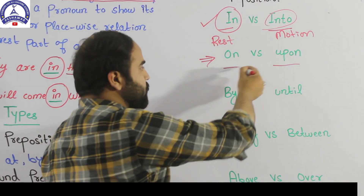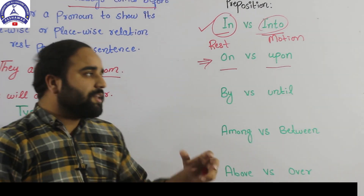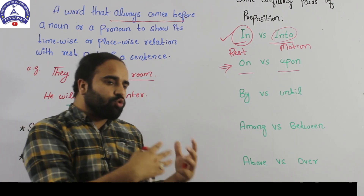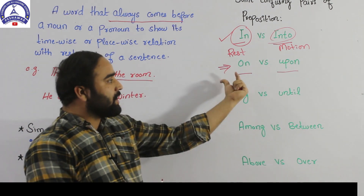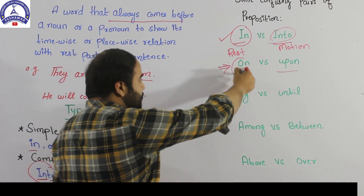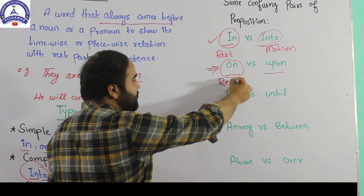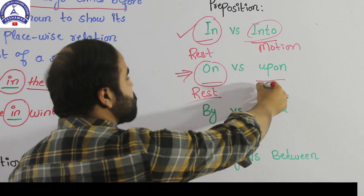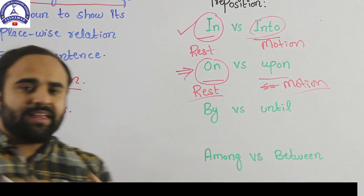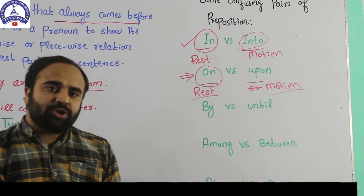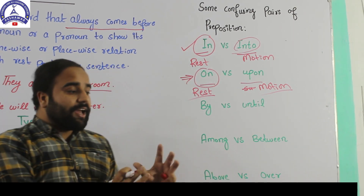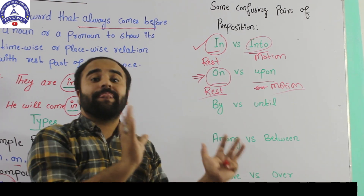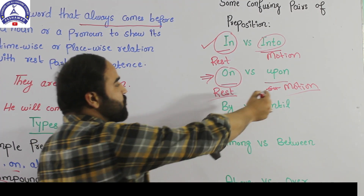On versus upon — both look the same but there is a difference. When something is on a surface and it is at rest, we use 'on'. When something is in motion, we use 'upon'. For example, 'the glass is on the table' — the glass is at rest, so we use 'on'. But 'the frog jumped upon the table' — when you jump, you are in motion, so we use 'upon'.